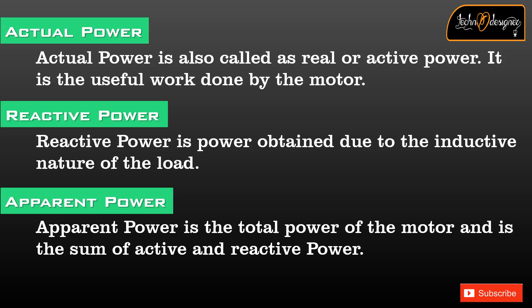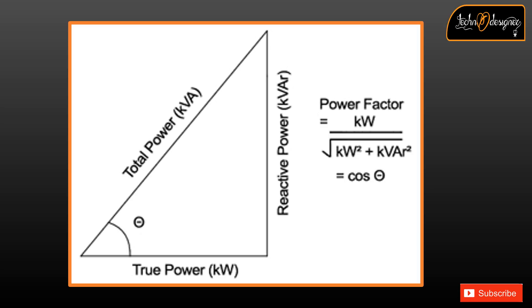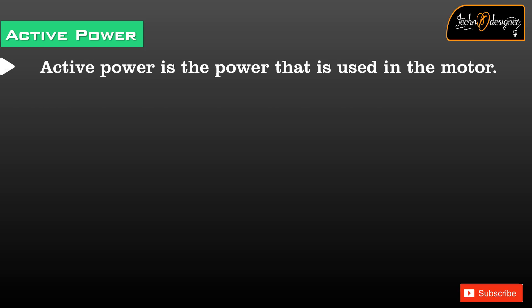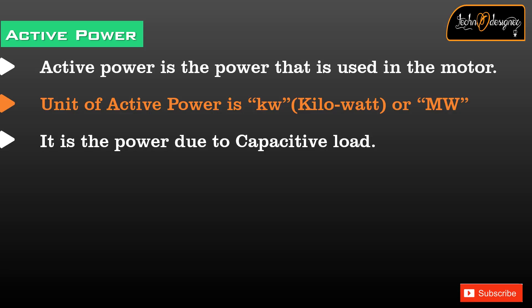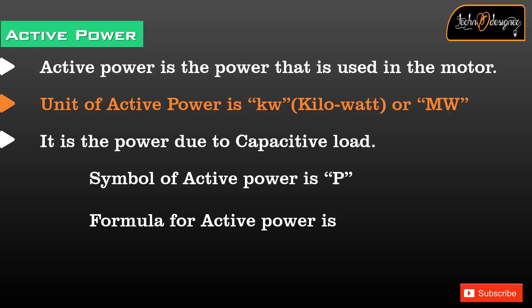Apparent power is the total power of the motor and is the sum of active and reactive power. Active power is the power that is used in the motor. The unit of active power is kW (kilowatt) or MW (megawatt). The symbol of active power is P, and the formula is P = S cos α.